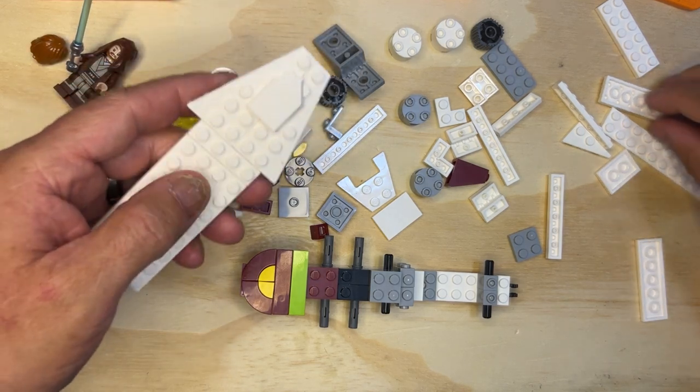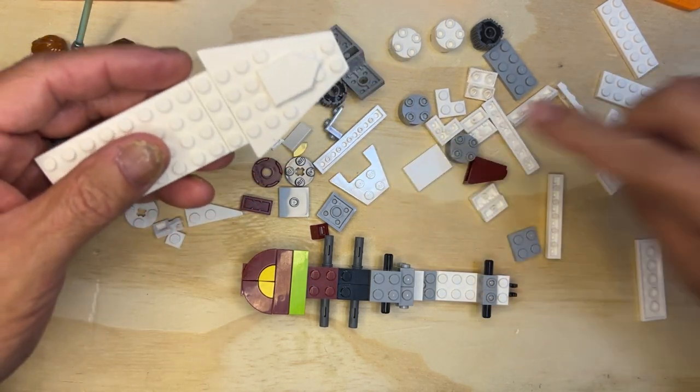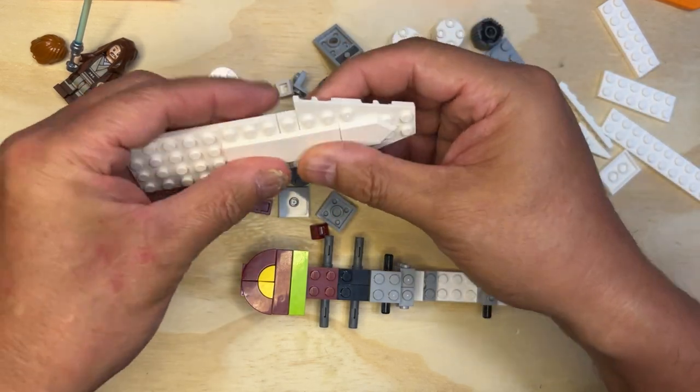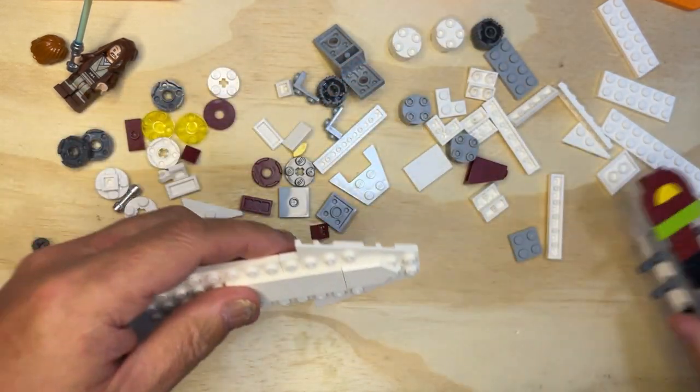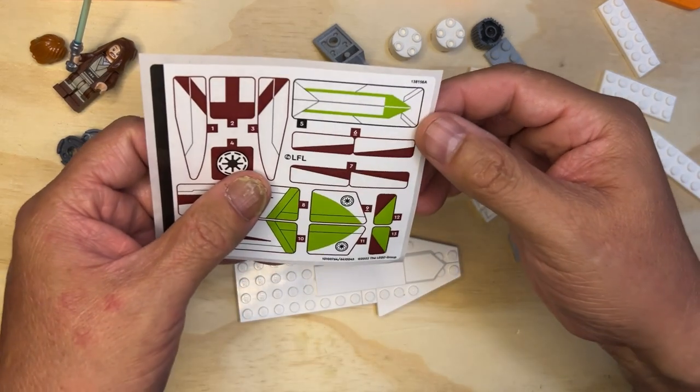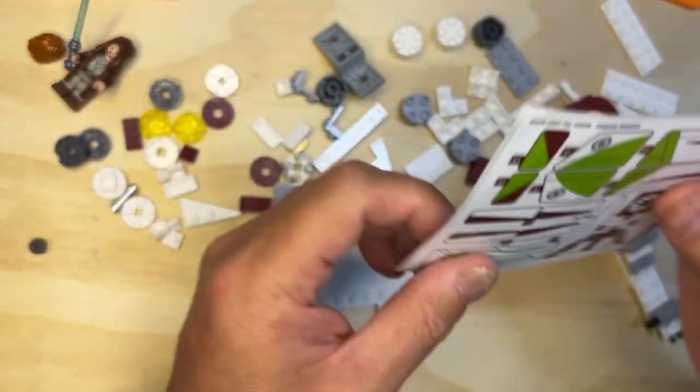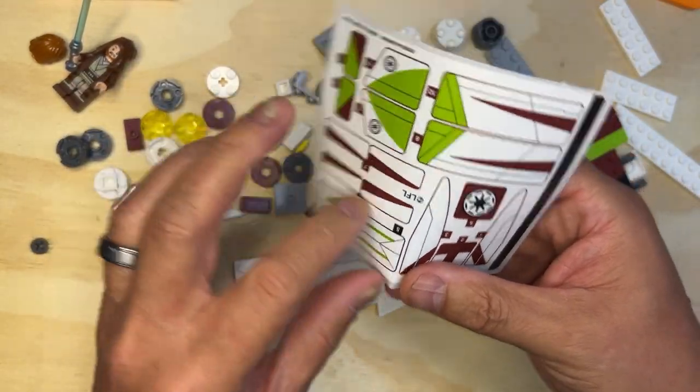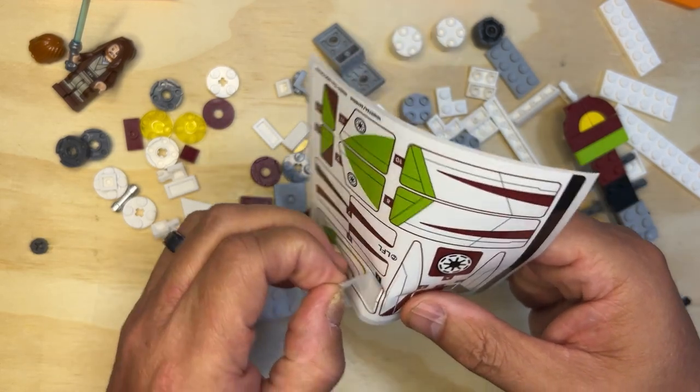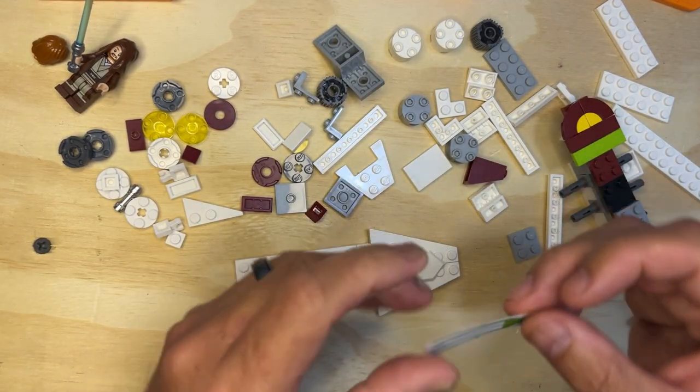And then I've got a flat plate that goes right back here. Oh, and we have a sticker, our first sticker. Gonna be which one? Number five. Got it.